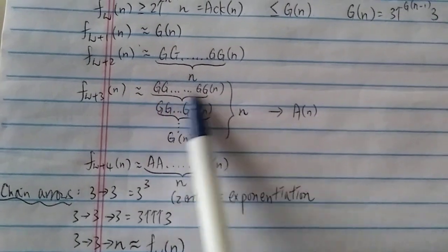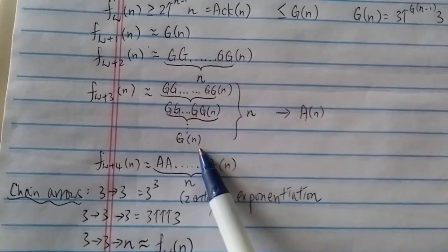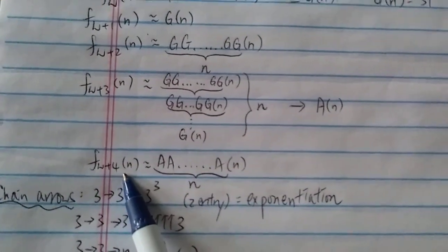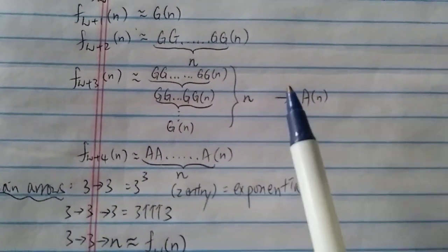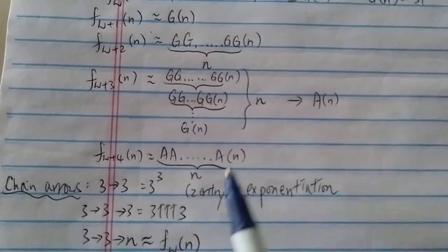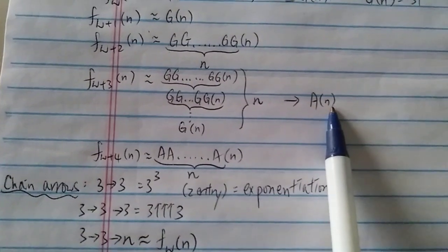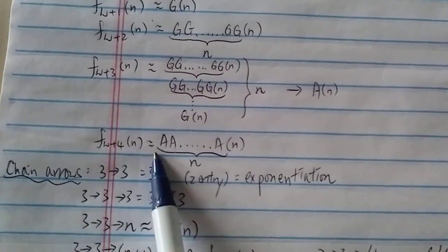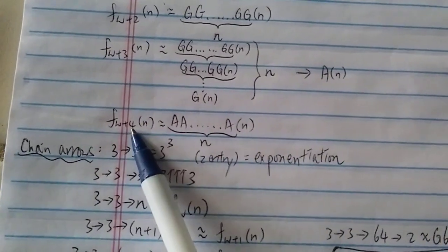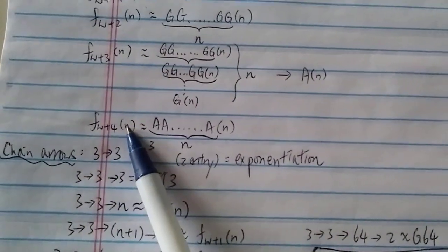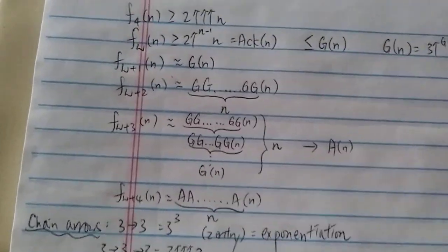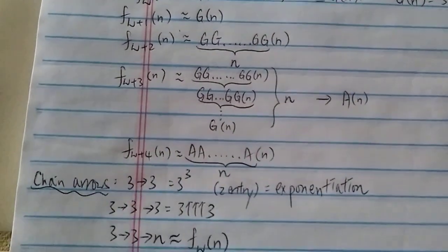For ω+3, you iterate the number of levels, where the number of levels is n. For f(ω+4), if you call the ω+3 level function a(n), then a(n) has growth rate around ω+3, and f(ω+4) is just iterating the a function. You just keep repeating the same method to get ω+m, going up the fast-growing hierarchy ladder by repeating the same process.